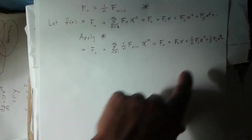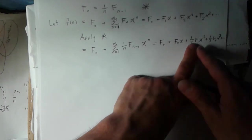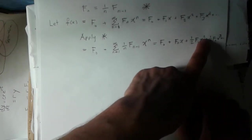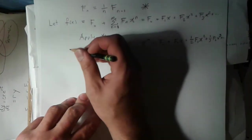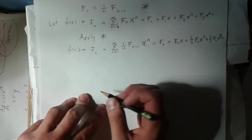You can notice here that this 1 half kind of lines up with this 2 exponent. This 1 third lines up with this. So what I can do is just look at, this was f of x, let's differentiate it. Let's look at what is f prime of x.